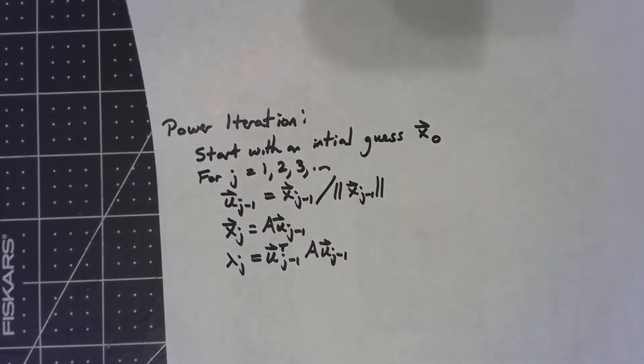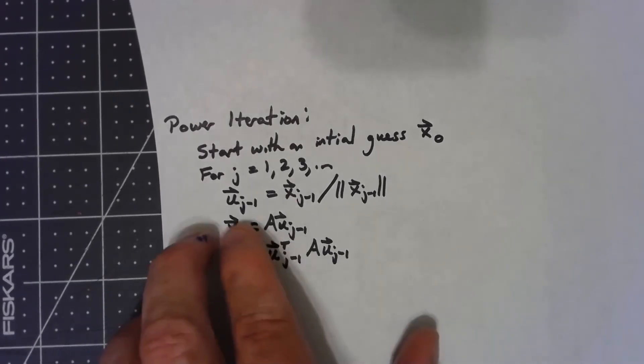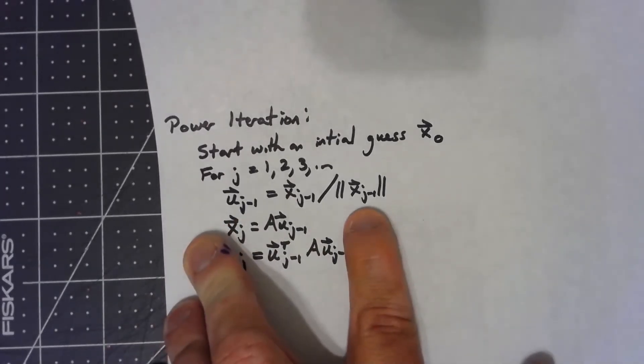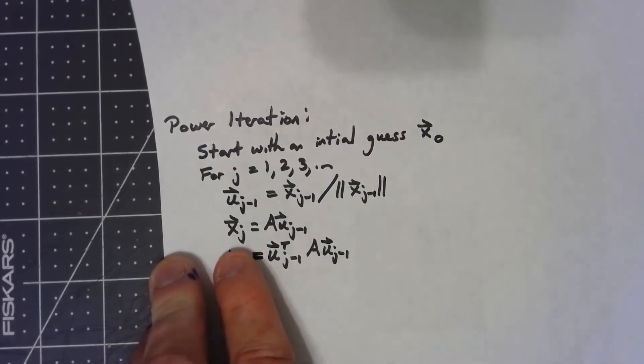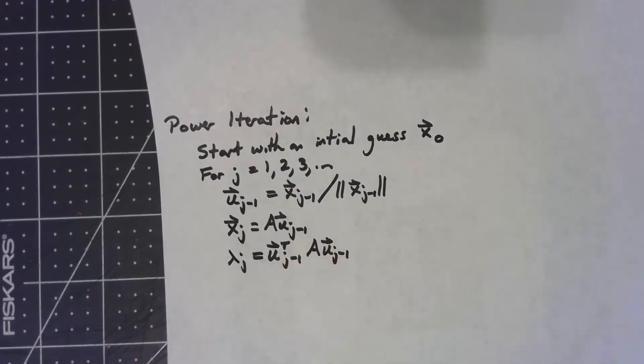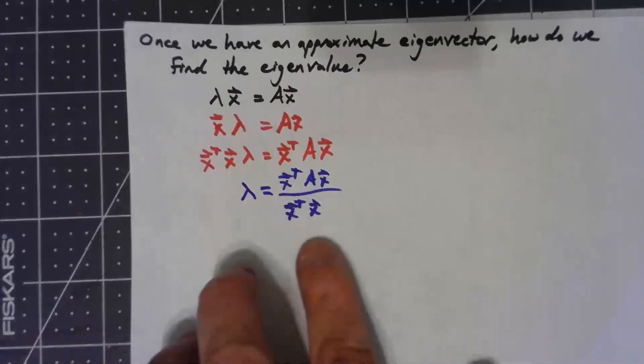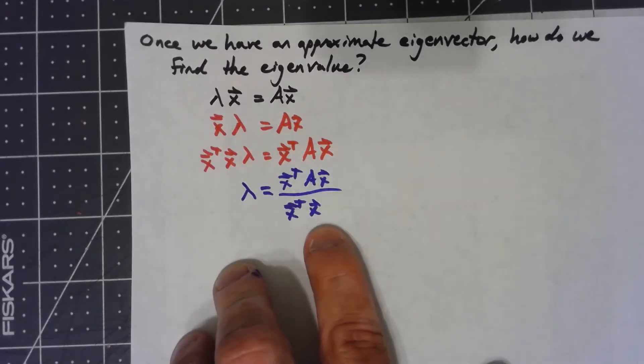So let's put all this together into something we call power iteration. We start with an initial guess, we'll call it x0, and then we keep iterating. Each first thing we do is we just normalize the vector. And then we say our next guess is A times that normalized vector. For that thing, we go ahead and we calculate what is the associated eigenvalue based on this thing here, which is called the Rayleigh quotient, by the way.